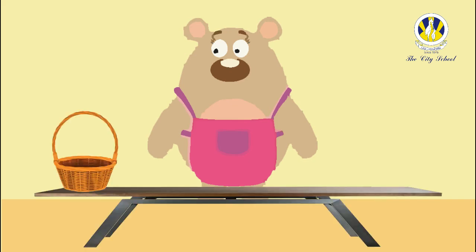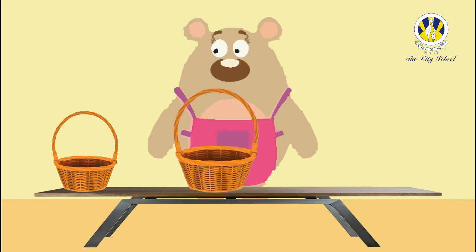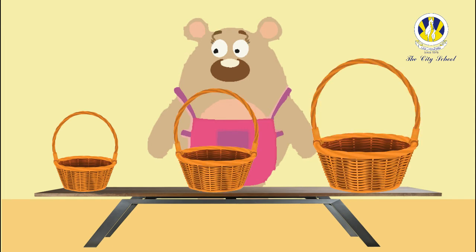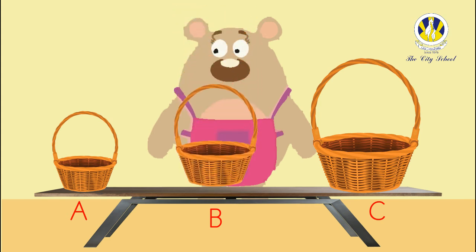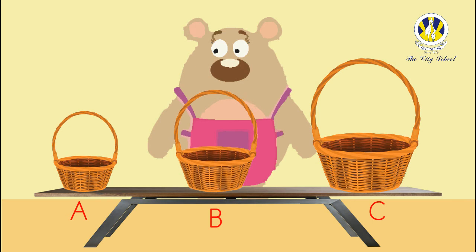Mama Bear wants to buy a basket. There are three sizes available. Can you tell which basket Mama Bear would want to buy? Is it basket A, B, or C? Keep thinking... Simply splendid! Mama Bear will buy basket B, as it is just the right size for her.